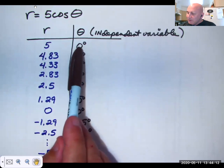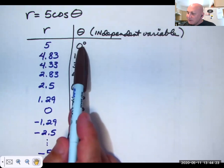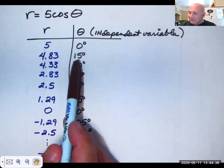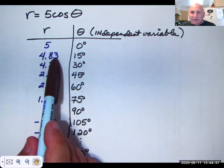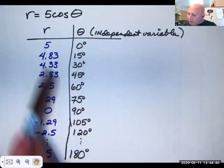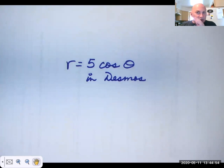So if you put your calculator in degree mode, you should be able to come up with the same numbers that I'm coming up with. So at zero degrees, R is five. You go up to 15 degrees, you'd go up to the 15 degree line, but you'd only go 4.83 units away from the pole. If you were to graph all of these points, and you can pause to record those points if you'd like, what you're going to get is a circle. So we're going to graph R equals five cosine theta in Desmos, just because I don't want to spend the time doing it here on this video.